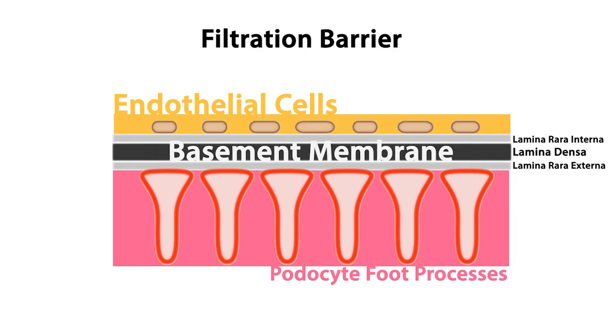The primary function of the glomerular basement membrane is to restrict the passage of plasma proteins and help maintain the structural relationship between the glomerular capillary endothelial cells and podocyte foot processes.